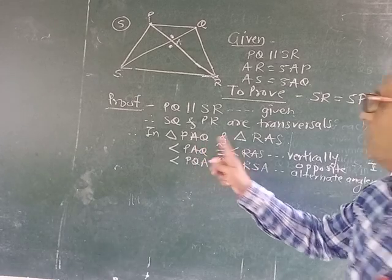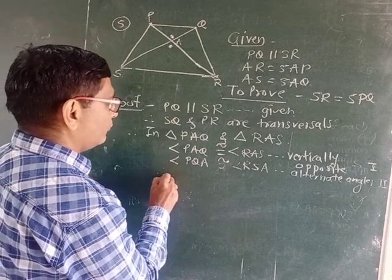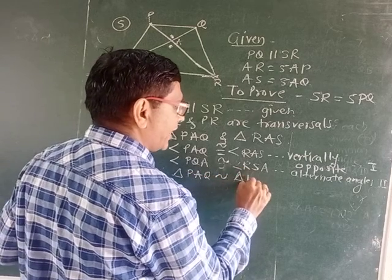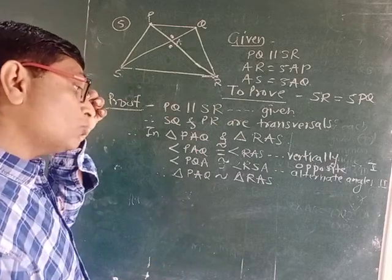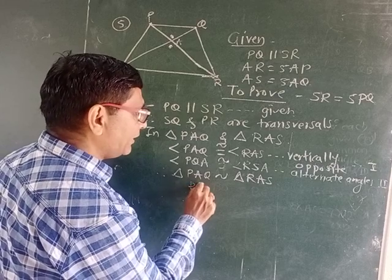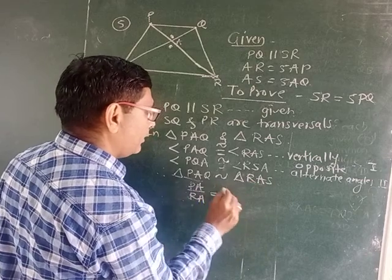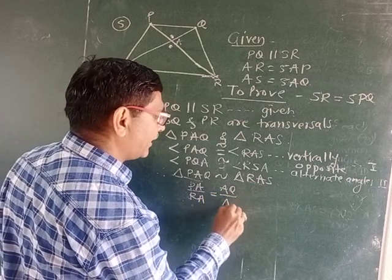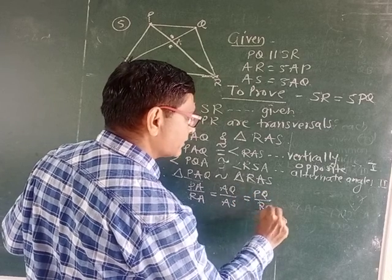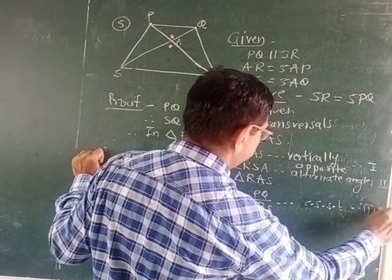In these two triangles we have shown two pairs of angles are congruent. Therefore, triangle PAQ is similar to triangle RAS. Now we write their CSST — corresponding sides of similar triangles: PA/RA = AQ/AS = PQ/RS.